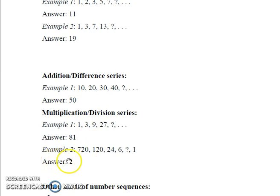In the next example, we have a decreasing sequence. The first term is 720, and if we divide it by 6, we get 120 which is the second term of this sequence. Similarly, if we divide the number 120 by 5, we get 24 which is the third term. And again, if we divide 24 by 4, we get 6 which is the fourth term of this sequence.